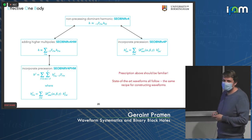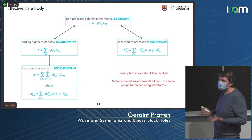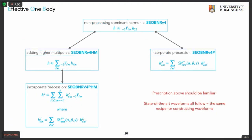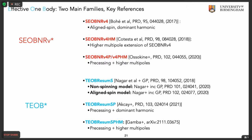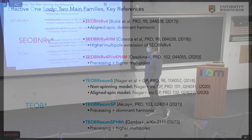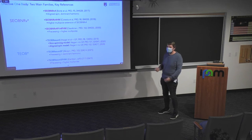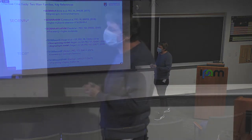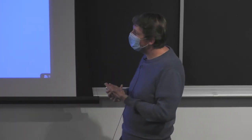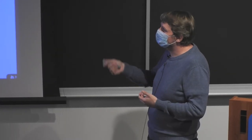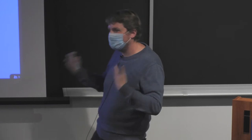The structure of EOB waveforms mirrors the same approach used in Phenom: first model the dominant harmonic, then incorporate precession or add higher multipoles, then incorporate precession with higher multipoles. The difference is that EOB is natively done in the time domain. There are two main families of EOB models, with different choices for the Hamiltonian, different gauges, different calibration choices, different physics. For instance, even spin-orbit couplings differ between models — you have different gyro-gravitomagnetic ratios entering these models.